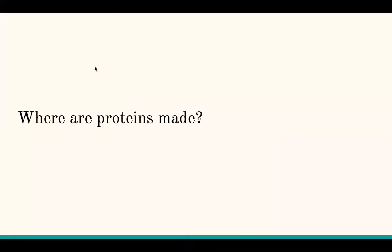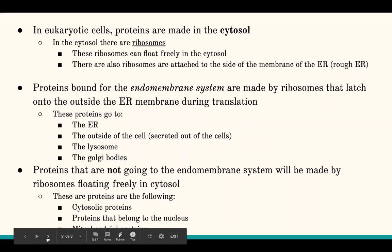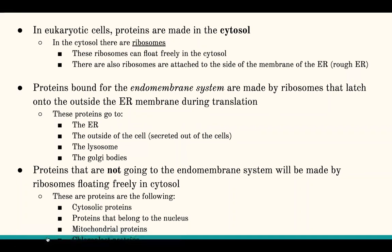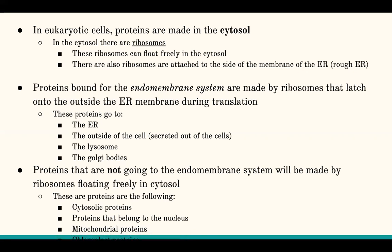First we're going to talk about where proteins are made. Proteins are made in the cytosol, and we learned this week that the cytosol or cytoplasm contains ribosomes that are involved in translating the protein. There are two types of ribosomes we discussed: freely floating ribosomes, and ribosomes that are docked onto the ER, the endoplasmic reticulum. Depending on what kind of protein you have or where the protein is going to go in the cell, you can have a protein created on either ribosome.